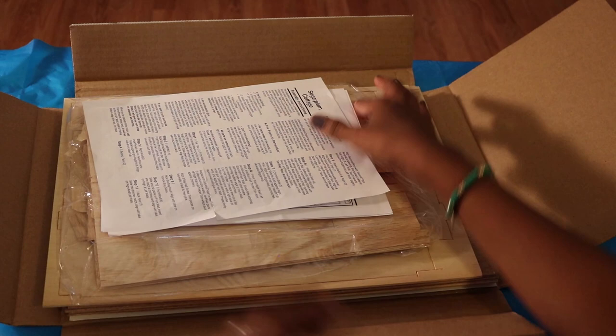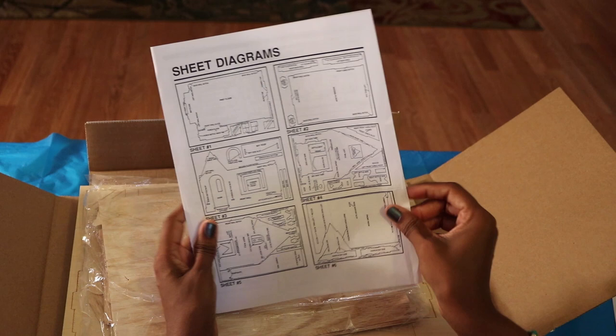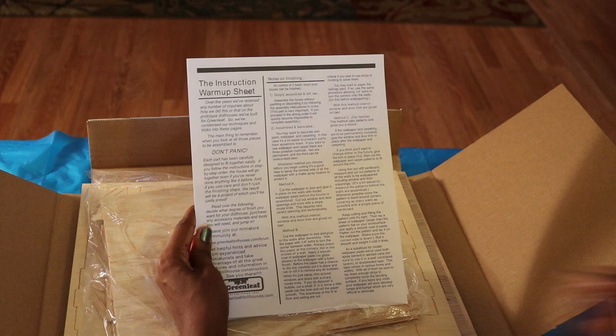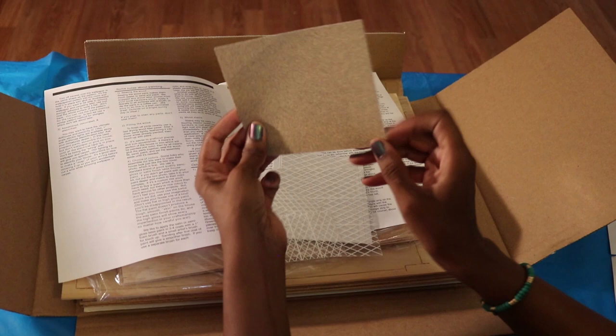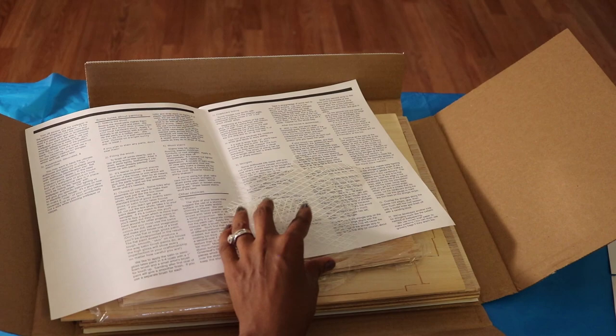When you open the box the first thing you'll see are your instructions. There's a diagram sheet that tells you where all the pieces are. This is a warm-up sheet. It says don't panic. Don't be alarmed by that. It's in all the kits and it just has some hints and tips that you might find useful. There's a piece of sandpaper and this kit does come with furniture so that's part of the bed frame.